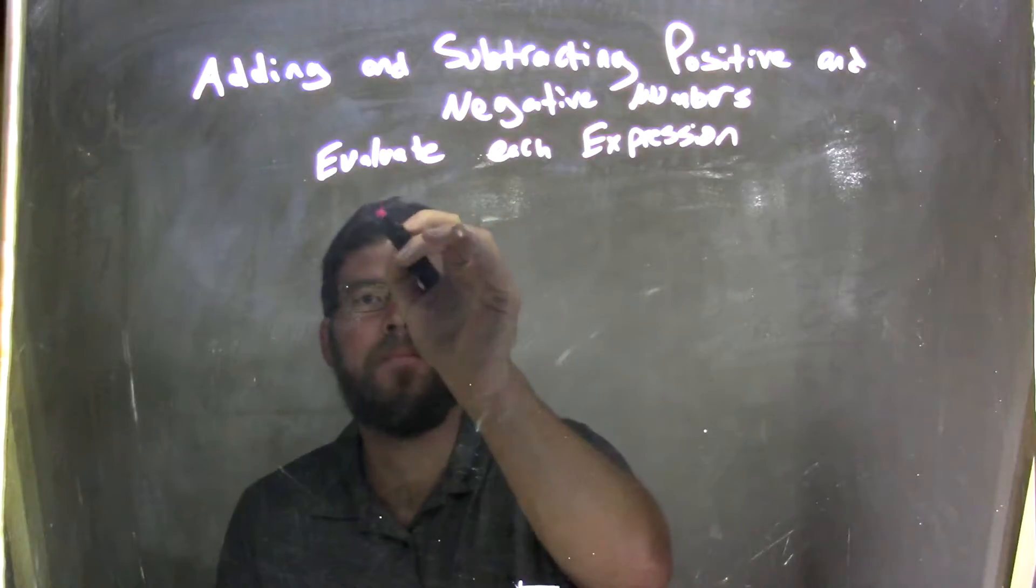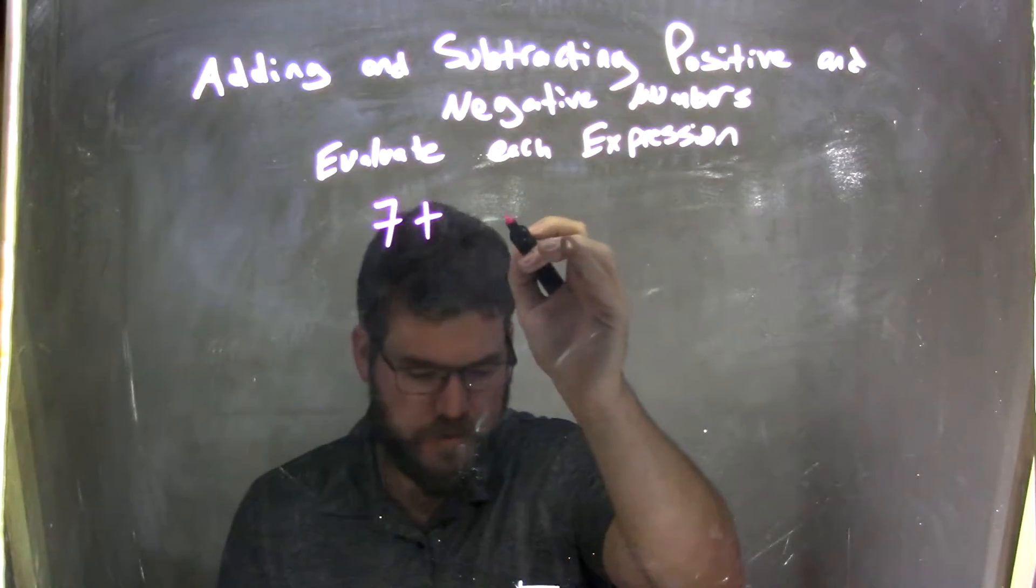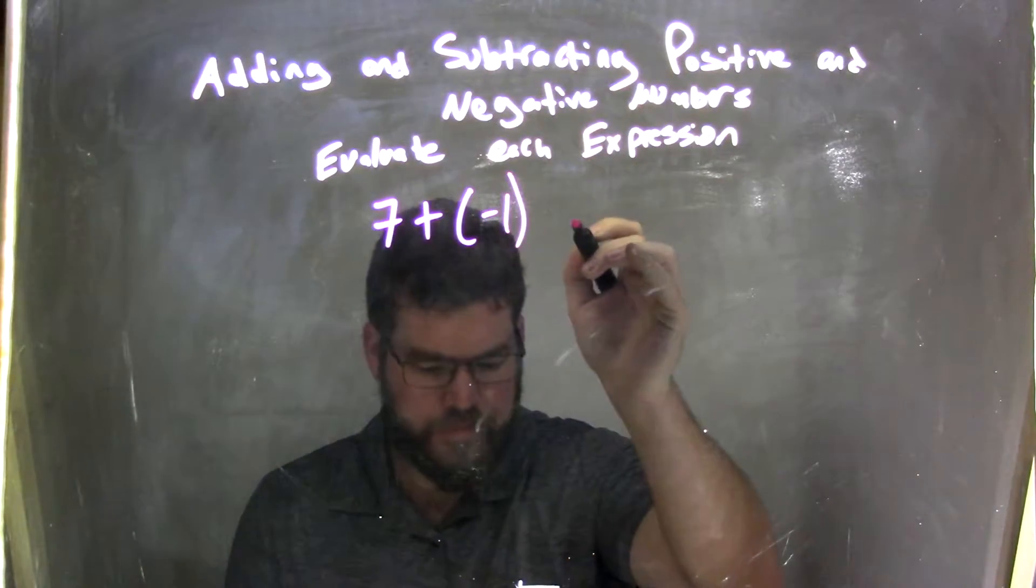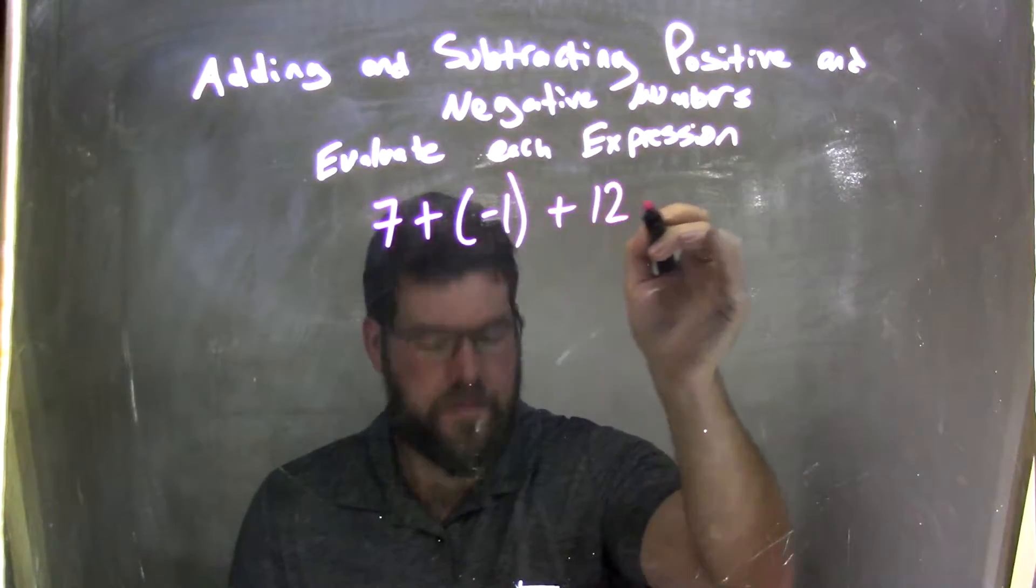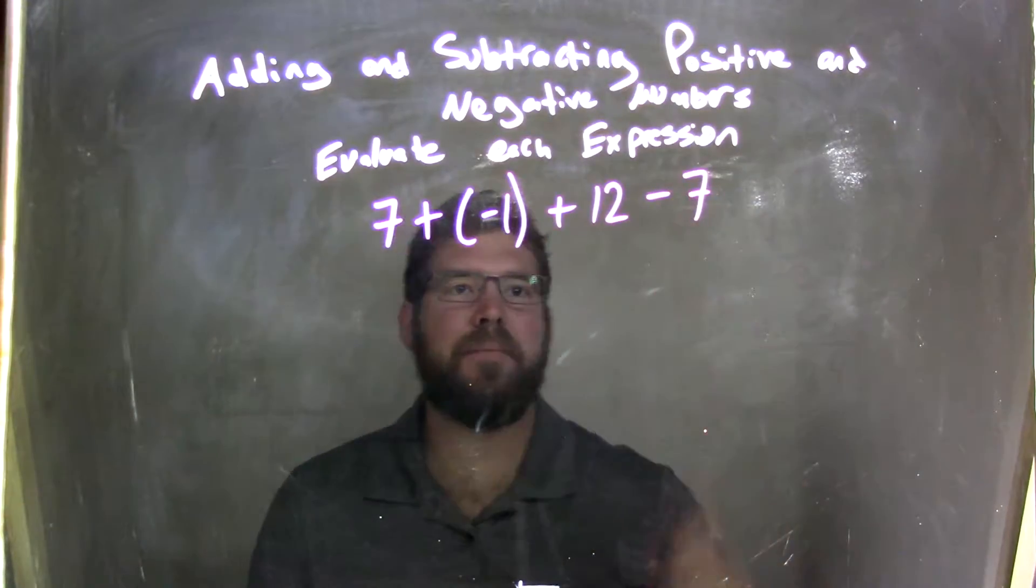So if I was given this expression: 7 plus a negative 1 plus 12 minus 7, okay?